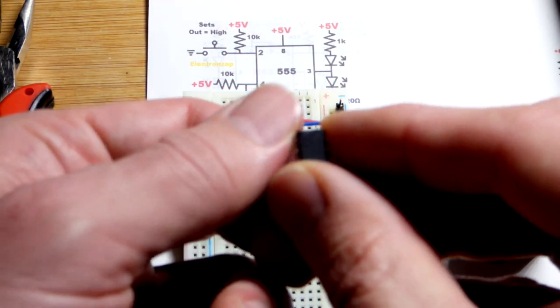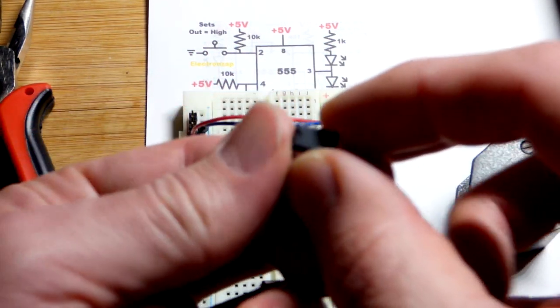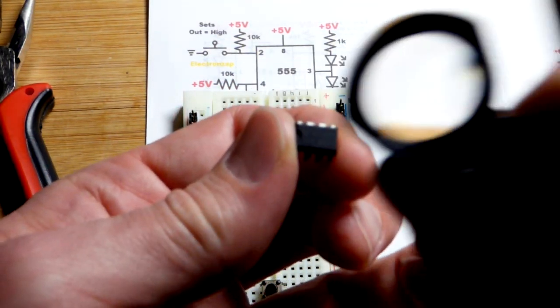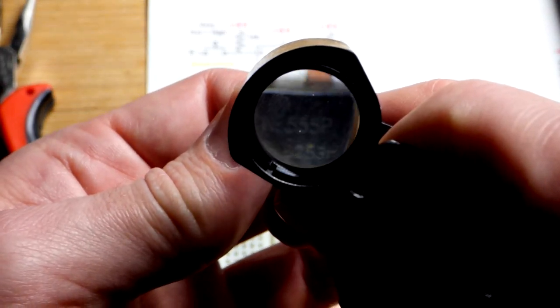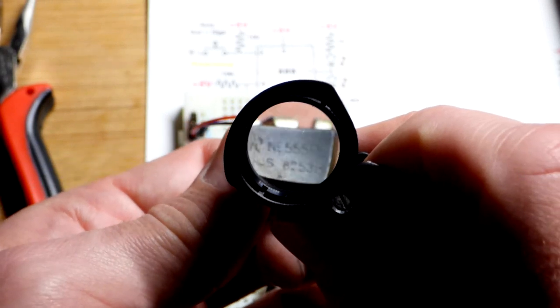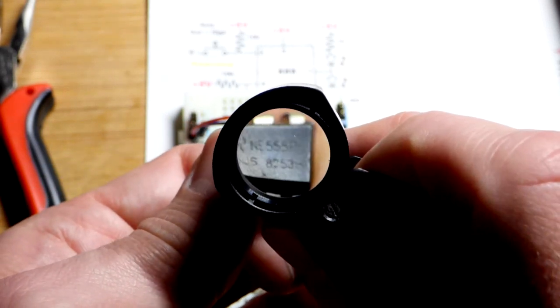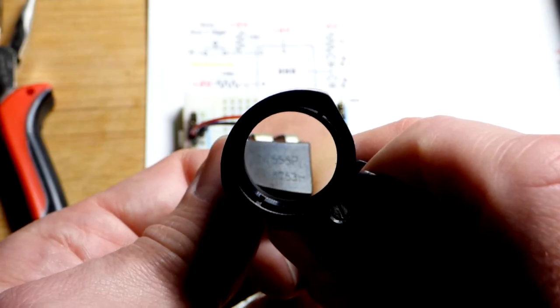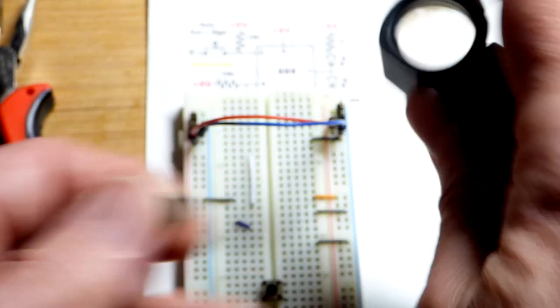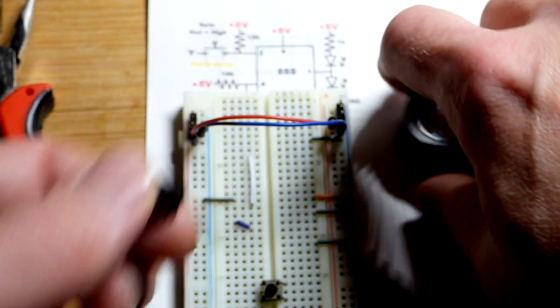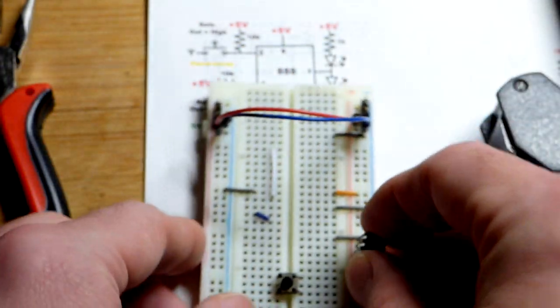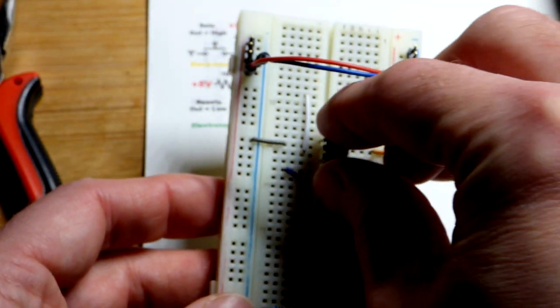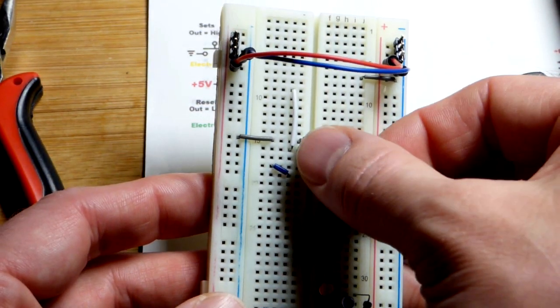We're using the 555 timer - the top has a little divot there. Turn it to the left if you want to read the part number. You got NE555. If it says UA555, that works as well. P means it's an improved version. If there's different letters in front, it might be a different type of 555 timer with different electrical properties, so make sure you check the data sheet.